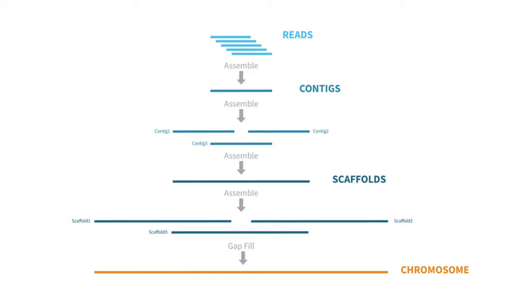There are many de novo assembly algorithms and software applications available for next-generation sequencing projects. For small genome assembly such as bacterial-scale genomes, tools such as SPAdes and Genius can be useful.